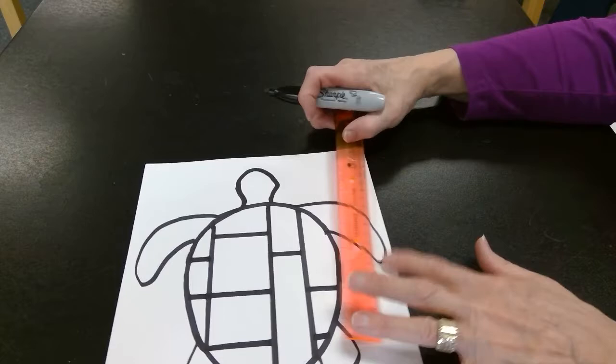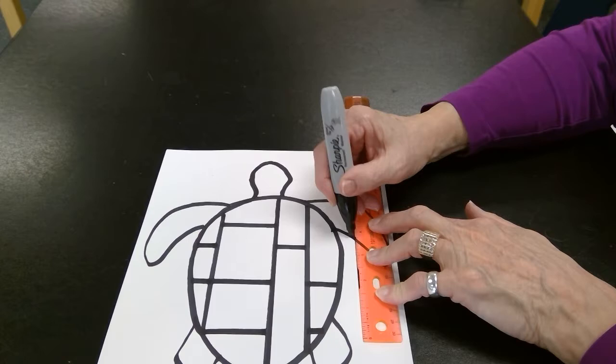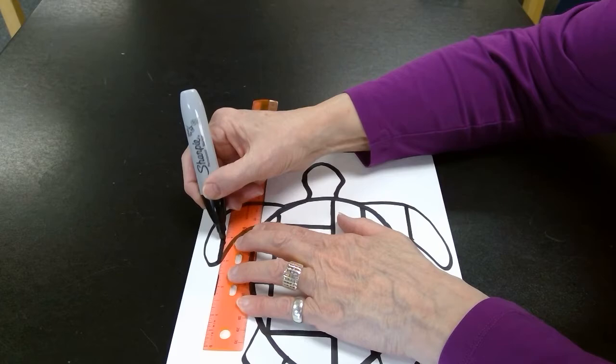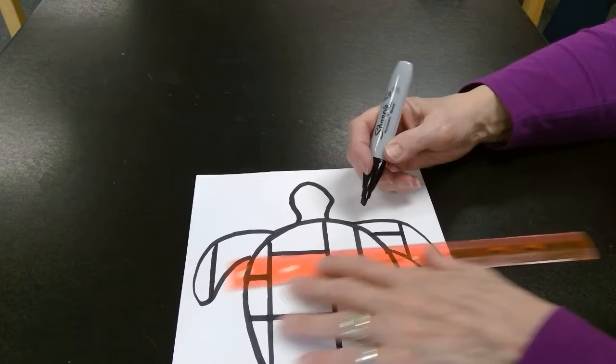I'm also going to add some on the flippers. I'll put one vertical one here. And one on this side. They don't have to be the same. I'll add a horizontal line here. And one right there.